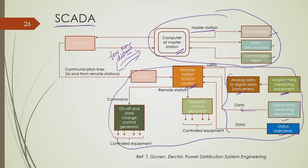The remote station also has control action generators that produce desired set points for controllable equipment, and on/off state changer controls — for example, capacitor control to switch a capacitor bank on or off. Operating the remote station from the master station a few kilometres away is the SCADA process, and a communication link with modems enables proper communication between the master station and all remotely controlled stations.